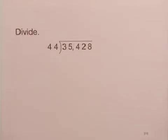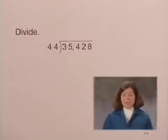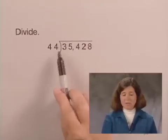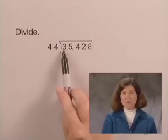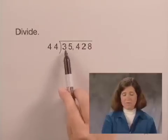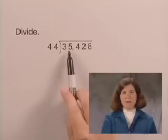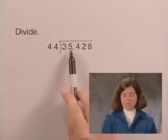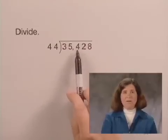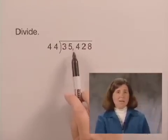We're asked to divide 35,428 by 44. To do so, we look at the divisor 44 and ask ourselves, can we divide 3 by 44? We can't do that, so we look at the next number, can we divide 35 by 44? Again, 35 is smaller than 44, so we continue. Can we divide 354 by 44? Well, yes we can.